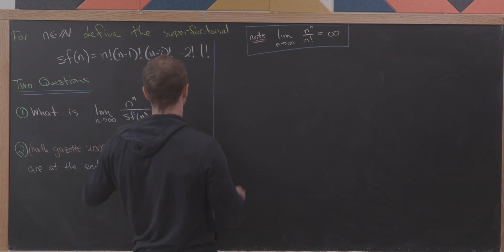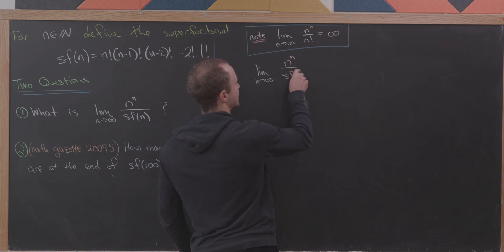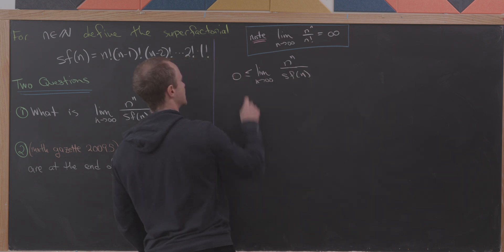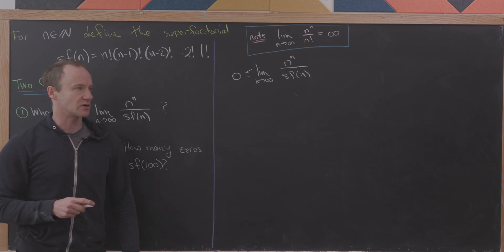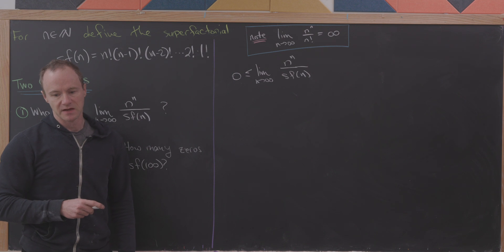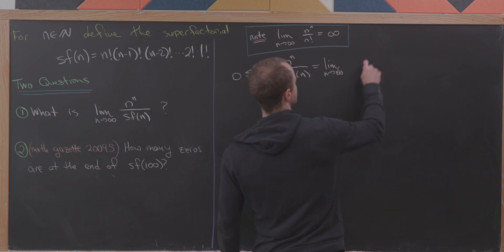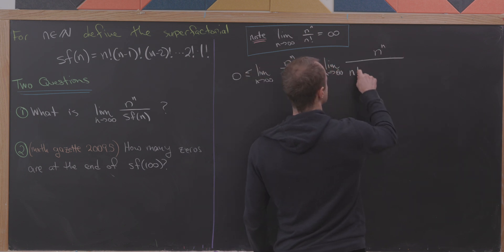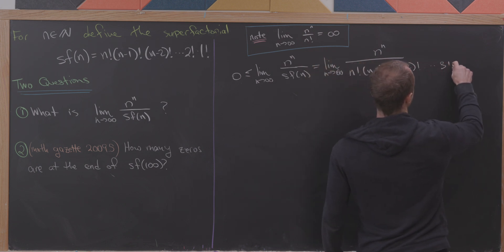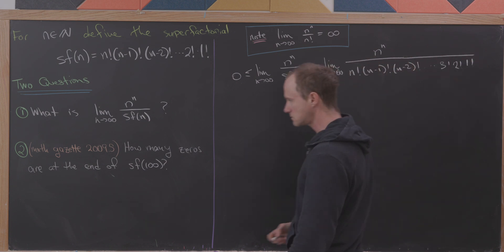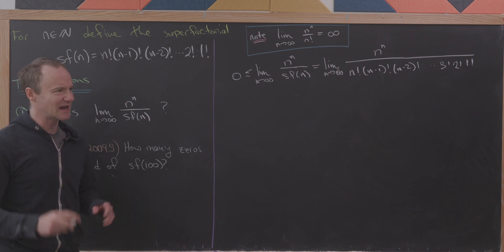Let's get to it. We have the limit as n approaches infinity of n^n over sf(n). This limit is definitely greater than or equal to zero since all terms are positive. Applying the definition of the superfactorial, the denominator becomes n factorial times (n−1) factorial times (n−2) factorial, all the way down to 3 factorial, 2 factorial, 1 factorial. Now we're going to do an inequality argument — kind of like the squeeze theorem.